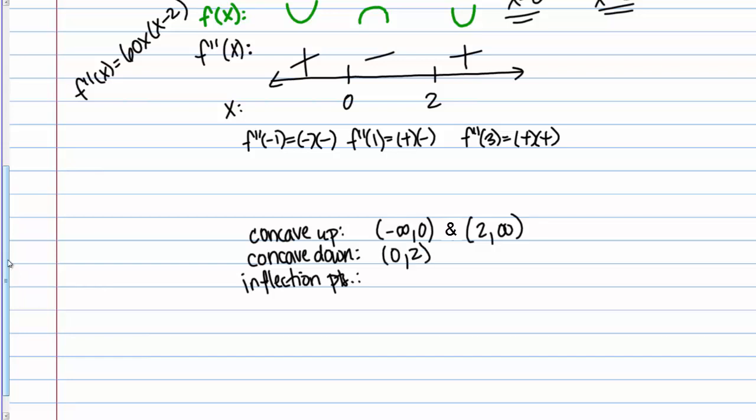Then my inflection points are places where the concavity changes. In this case, that happens at x equals 0 and x equals 2.